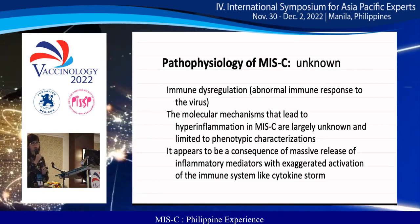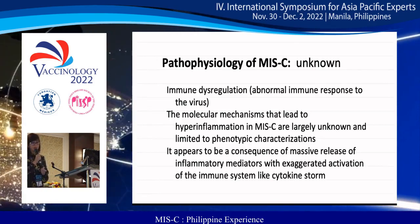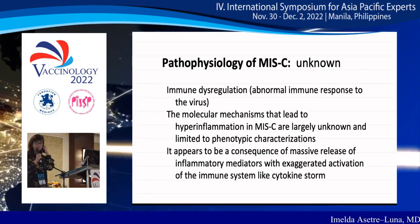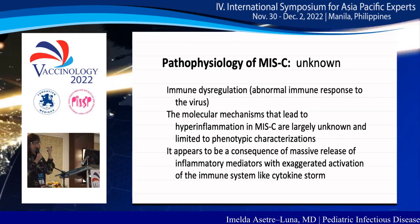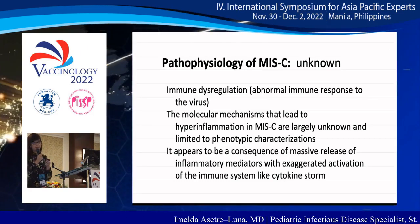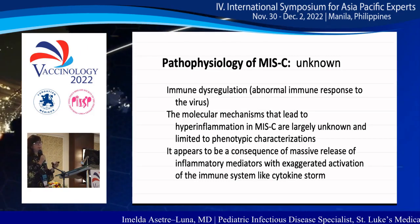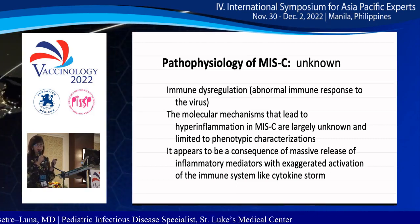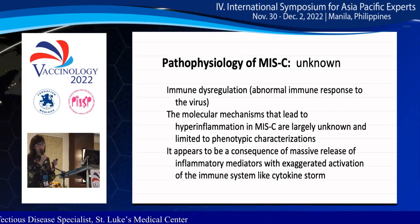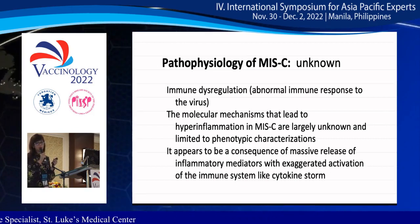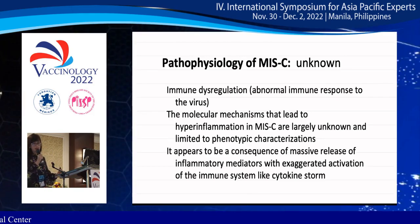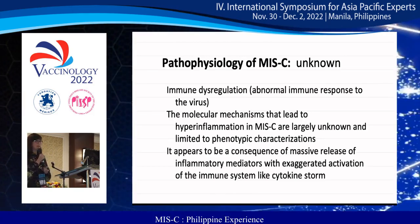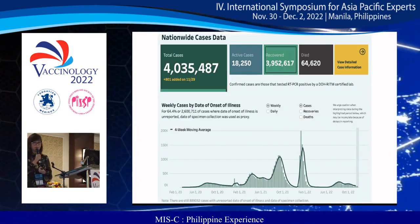Until now, the pathophysiology of MIS-C is unknown. There is some form of abnormal immune response to the virus. The molecular mechanisms that lead to hyperinflammation are still largely unknown, and it appears to be a consequence of massive release of inflammatory mediators with exaggerated activation of the immune system — like a cytokine storm.